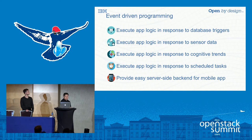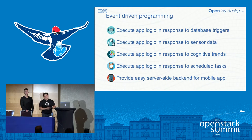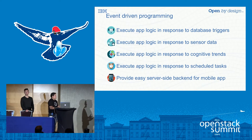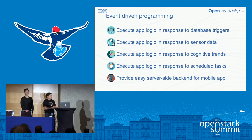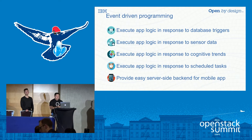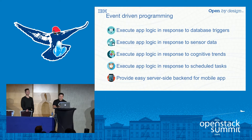Looking at event-driven programming — IoT-type applications where you have devices or endpoints that trigger some type of data, for example a change in a database, sensor information from a weather sensor or a door sensor — these typically require some kind of response to those actions. Consuming functional applications makes it easy for those event models to consume services. For cognitive trending or server-side backends for mobile apps, you really want the ability to quickly spin up resources.